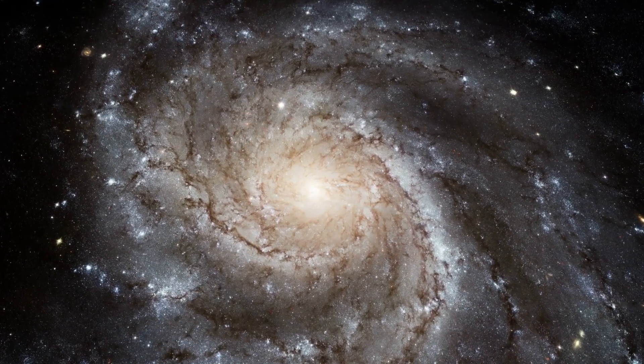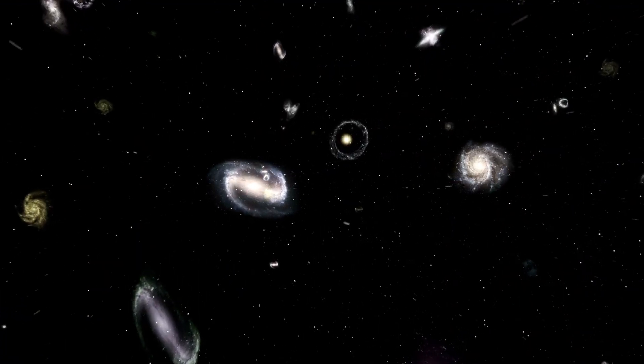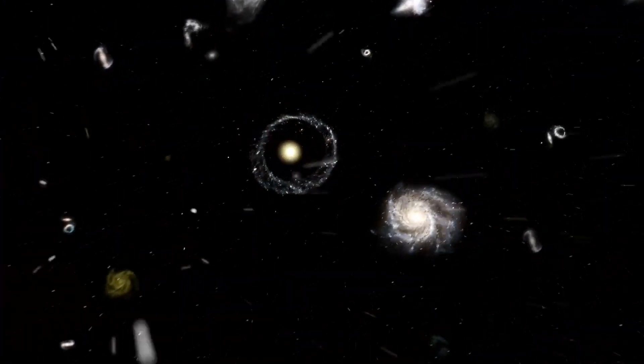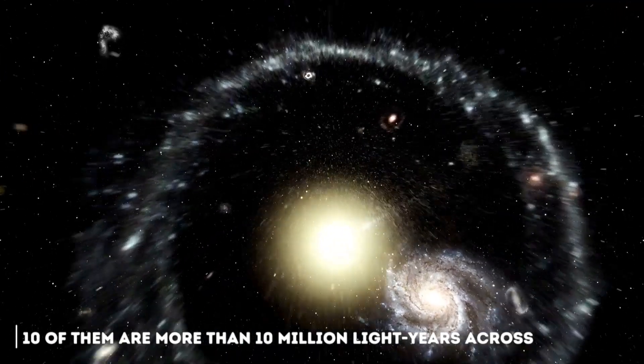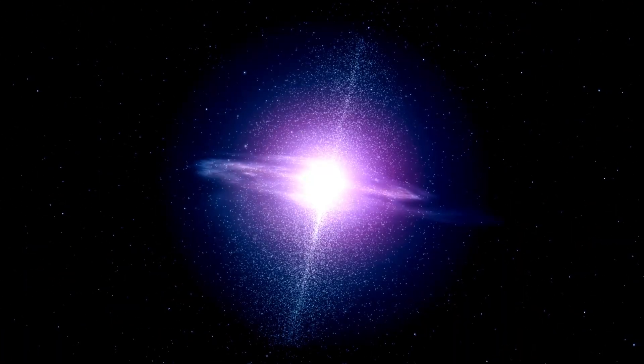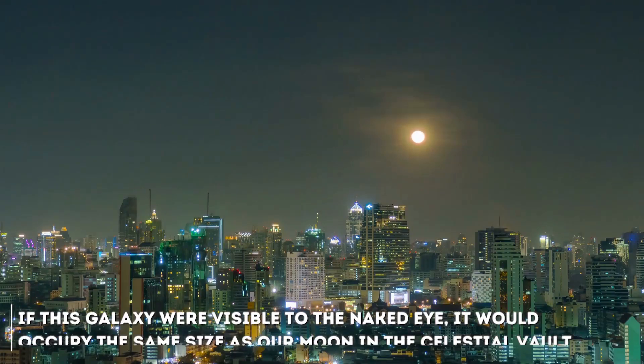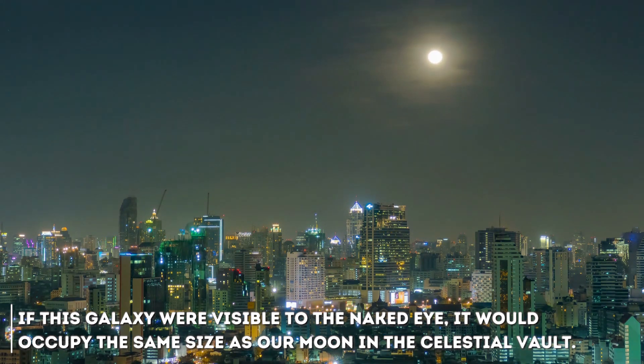Here we must take a moment and weigh our knowledge especially about this particular type of galaxy. To date, there are approximately 1,000 radio galaxies known to exist, of which only 10 of them are more than 10 million years across. With its size and being located 3.5 billion years away, if this galaxy were visible to the naked eye, it would occupy the same as our moon in the celestial vault.